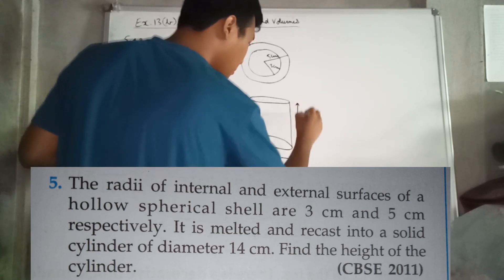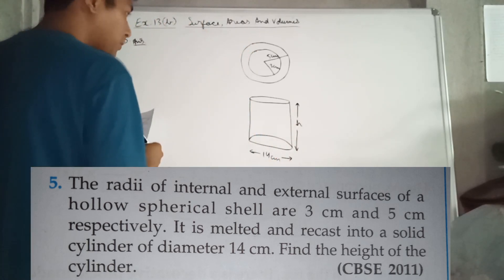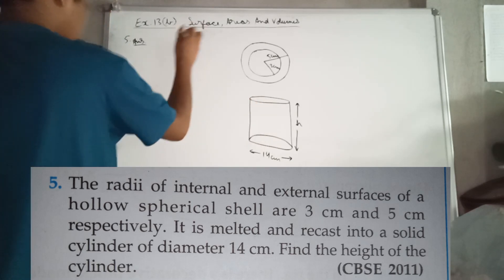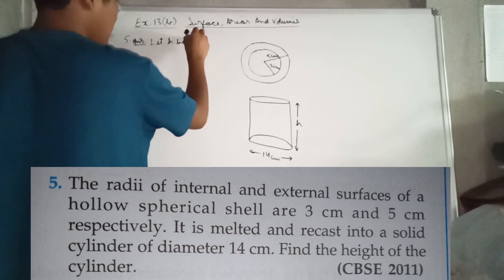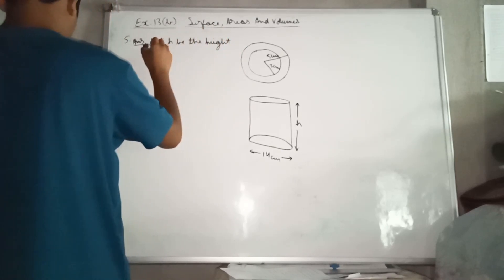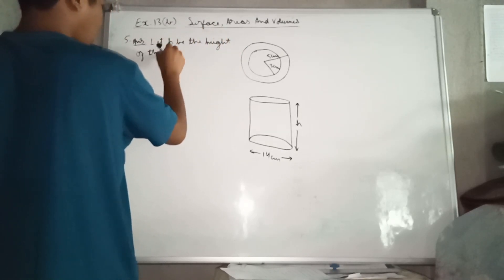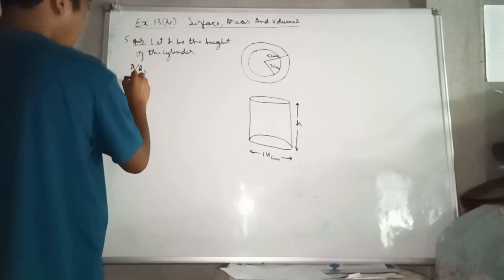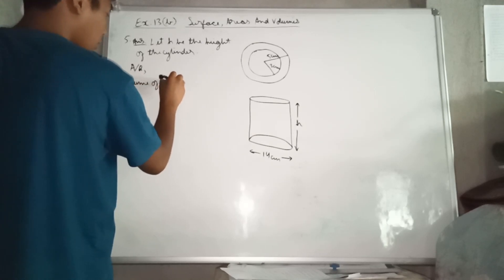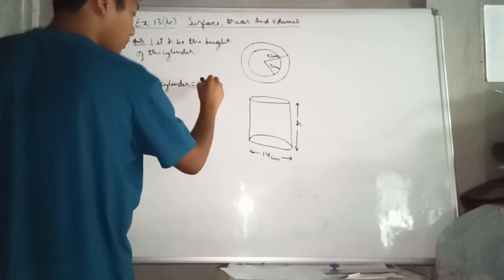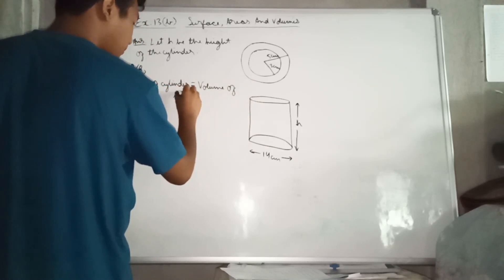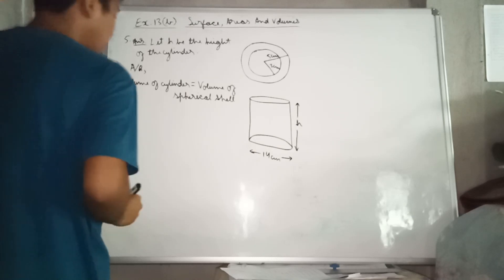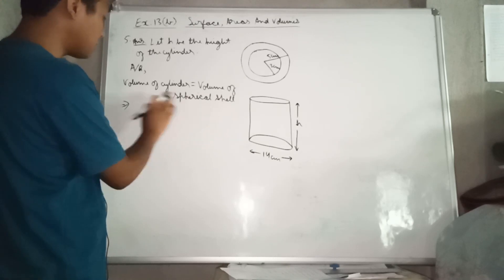Let H be the height of the cylinder. According to the question, the volume of the cylinder is equal to the volume of the spherical shell. We equate the two volumes using their respective formulas.